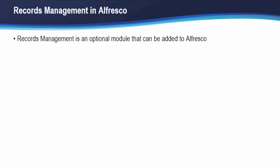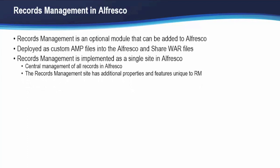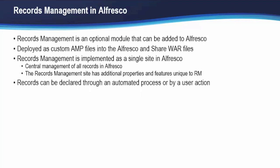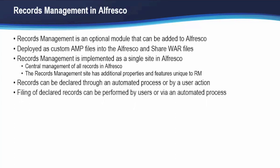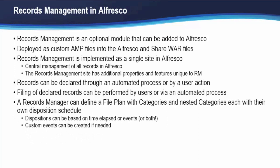Moving into records management in Alfresco, it's an optional module that can be added to Alfresco, deployed as custom AMP files that go into the Alfresco and Share WARs. Records management is implemented as a single site in Alfresco, which allows for central management of all records. The records management site has some additional properties and features unique to RM. Records can be declared through an automated process or by user action. Filing of declared records can be performed by users or also by an automated process. A records manager can define a file plan with categories and nested categories, each with their own disposition schedules.